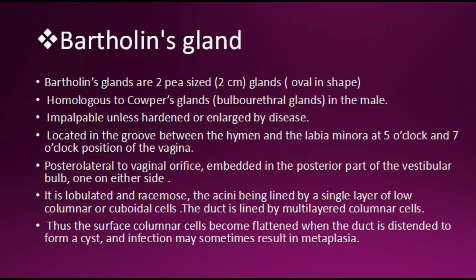The gland is lobulated. The acini are lined by a single layer of low columnar or cuboidal cells. The duct is lined by multi-layered columnar cells. The surface columnar cells become flattened when the duct is distended to form a cyst, and infection may sometimes result in metaplasia.